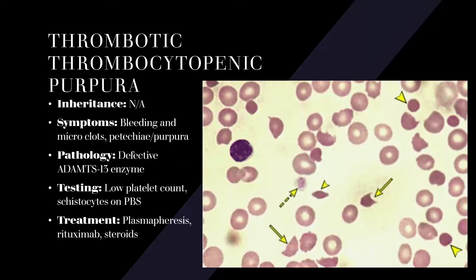Now we move to TTP — thrombotic thrombocytopenic purpura. The name actually contains most of the symptoms: thrombotic means you get microclots, thrombocytopenic means low platelets, and purpura means large bruises. Symptoms include bleeding (from low platelets), microthrombi, and petechiae with purpura. Each word in the name is basically what you need to know about this condition.